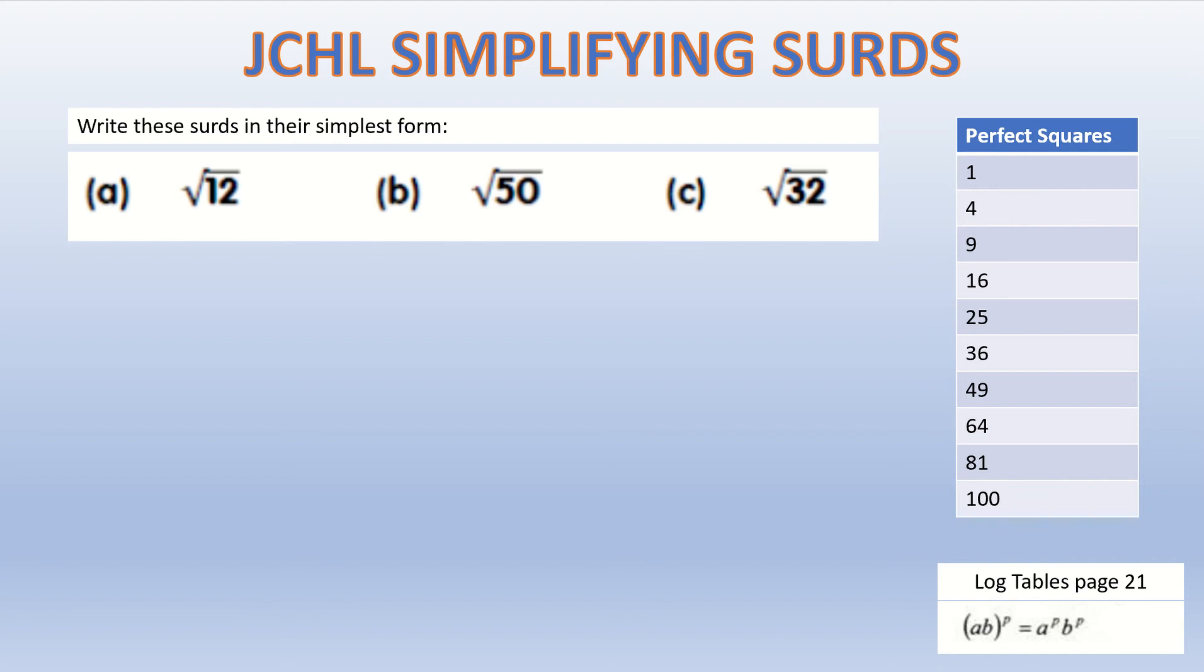I've written out three questions here: root 12, root 50, and root 32. What we're going to do is simplify each one of those. I'm going to take my time on the first one and just explain to you what's going on with it.